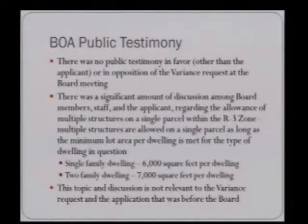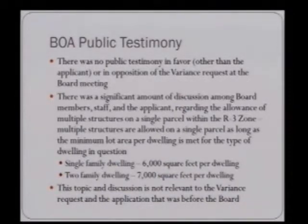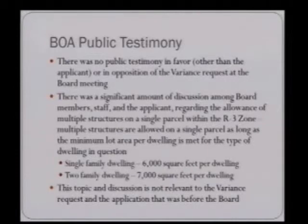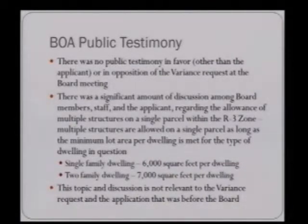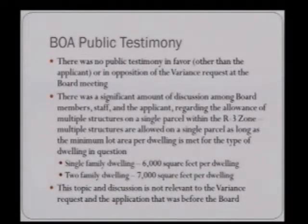On the night of the hearing, there was no public testimony in favor or opposition of the variance other than the applicant's testimony. There was significant discussion among Board members, staff, and the applicant regarding the allowance of multiple structures on a single parcel within the R3 zone. Multiple structures are allowed on a single parcel as long as the minimum lot area per dwelling is met. For example, a single-family dwelling requires a minimum of 6,000 square feet per dwelling, so a 12,000 square foot lot would be permitted to have two single-family homes. However, it's important to note that this topic is not relevant to the variance request before the Board.